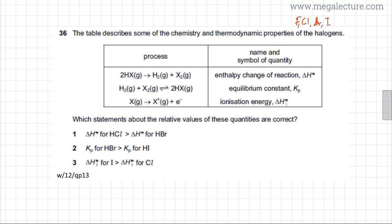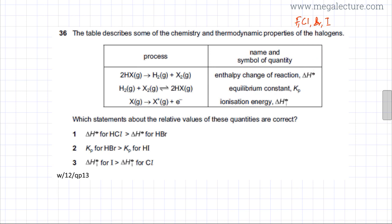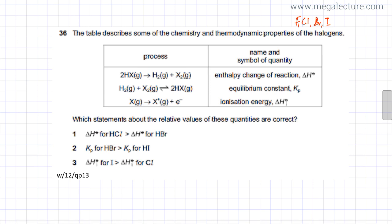A table is given where a process is described alongside the name and symbol of each quantity. The first quantity is the enthalpy change ΔH for a decomposition reaction where X is a halogen. The second is the equilibrium constant Kp for H2 reacting with a halogen to produce a hydrogen halide. The third is ionization energy, where a halogen loses an electron.